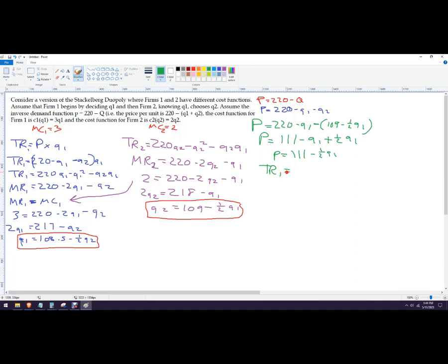So total revenue here is 111 Q1 minus 0.5 Q1 squared. Marginal revenue for firm 1 after considering what firm 2 is going to do, I'm going to set that equal to MR1 equals MC1. So this would be 111 minus Q1 equals 3. Rearrange, and 108 is Q1. So firm 1 is going to produce 108 units.